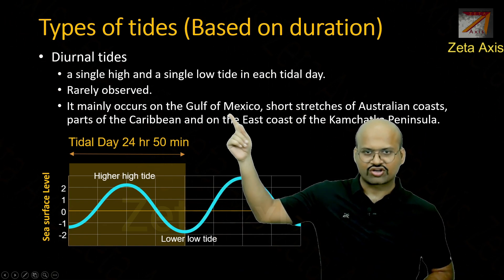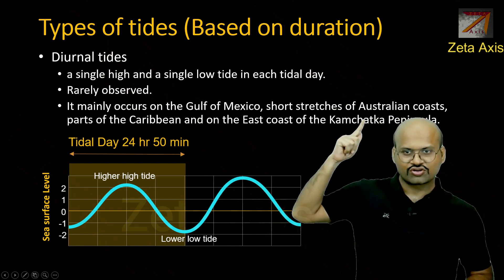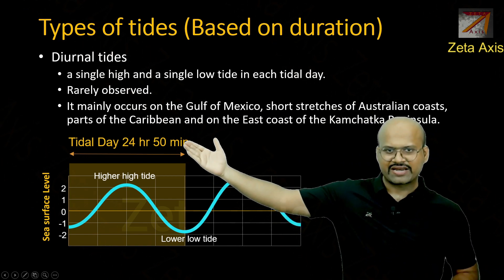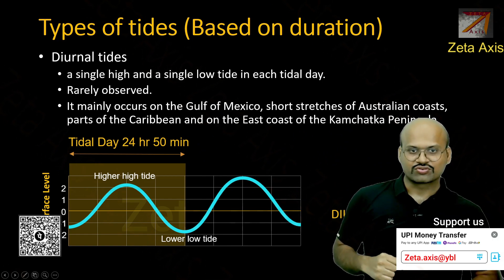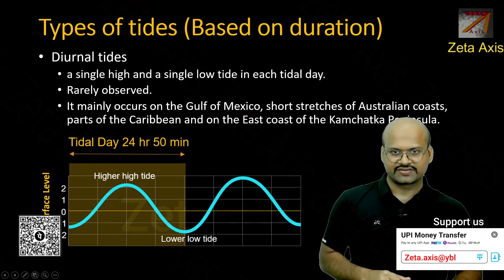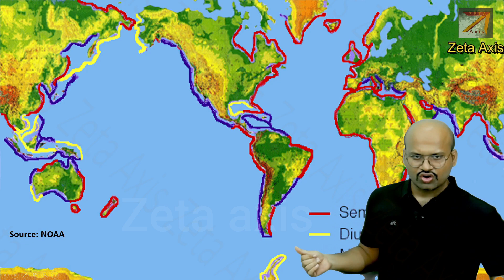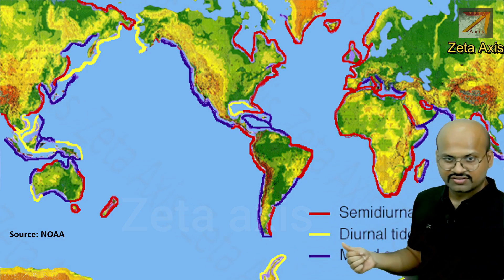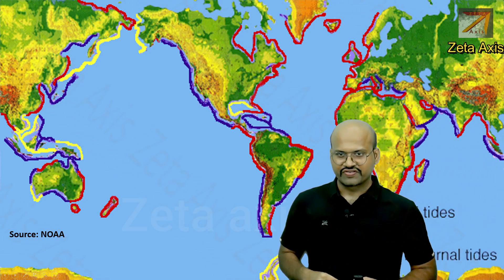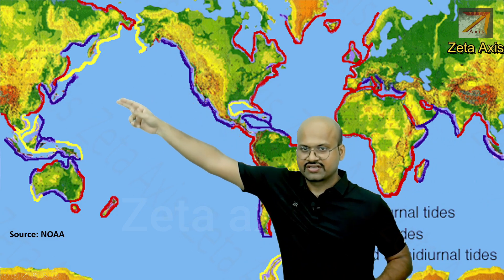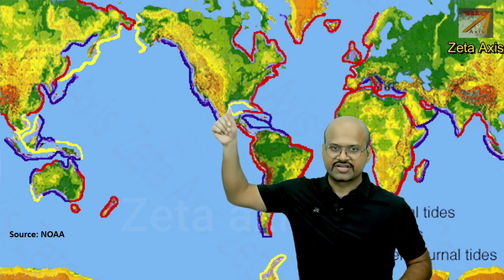Diurnal tides mainly occur across the Gulf of Mexico, short stretches of the Australian coast, the Caribbean, and the east coast of the Kamchatka Peninsula in Russia. In the diagram, the yellow color indicates diurnal tides, and we can see these regions highlighted accordingly.